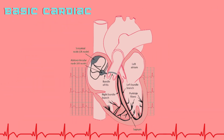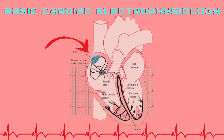To interpret an ECG, one must first understand the heart's intrinsic electrical system. The impulse begins in the sinoatrial node, or SA node, located in the right atrium — the natural pacemaker that initiates depolarization at regular intervals. The impulse then travels through the atrial tissue to the atrioventricular node, or AV node, where a brief delay allows the ventricles time to fill. From the AV node, the signal moves down the bundle of His, dividing into right and left bundle branches, and finally spreads through the Purkinje fibers, initiating synchronized ventricular contraction.